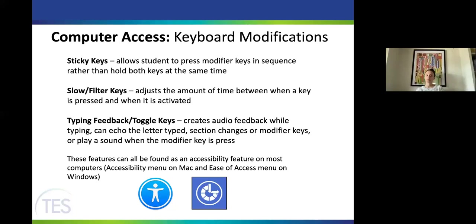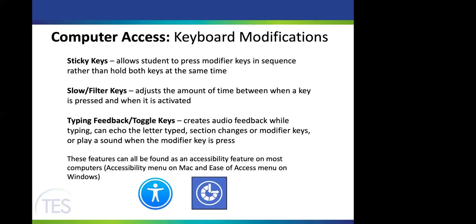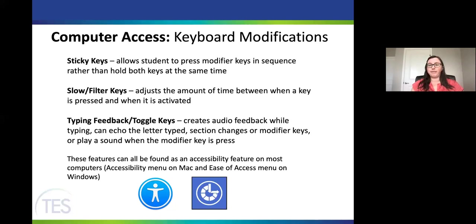The last built-in feature is typing feedback or toggle keys, which creates audio feedback while you're typing. Most people are familiar with this on iPhones or iPads — that clicking noise. You can also modify it to echo the letter being typed, your modifier keys, function keys, or change the sound. On a Mac, these are all found under the accessibility menu; on Windows, under the ease of access menu.